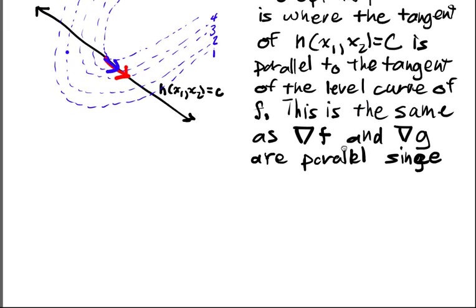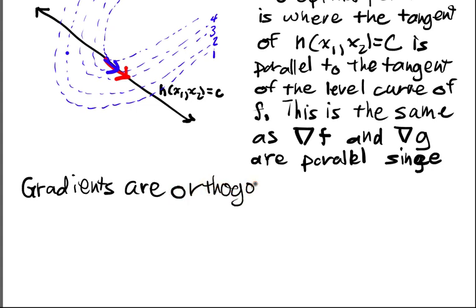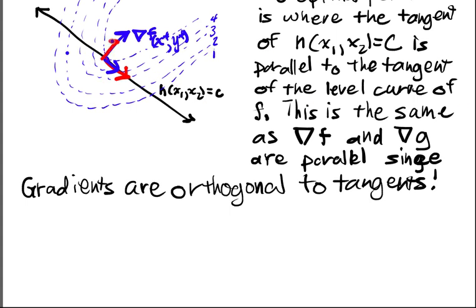And you should recall, gradients are orthogonal to the tangents. So those were the tangent directions, and so that means that my gradient of f at that point, we'll call this x star, y star, my gradient should align with my gradient of this function h at x star, y star. And what does it mean for two things, two vectors - these are two vectors - what does it mean for these two vectors to be parallel?